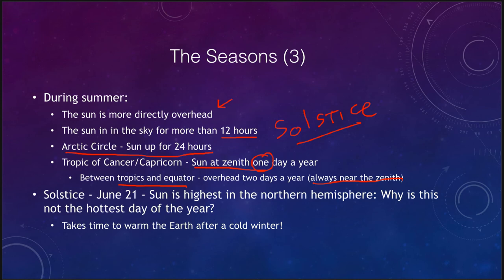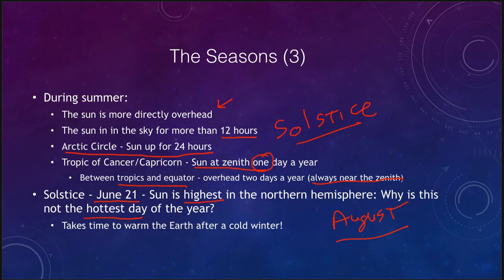On the summer solstice, around June 21st, the sun is highest in the sky in the northern hemisphere — but why is this not the hottest day of the year? Usually it's hotter in August. It takes time to warm the earth after it has been cold during winter, so many long days with the sun high in the sky are needed before peak warmth arrives. Similarly, December 21st has the shortest daylight and lowest sun, but it's not the coldest day because the earth has been warm from summer and takes time to cool off.